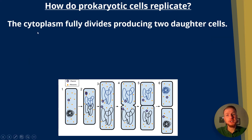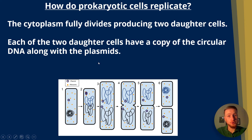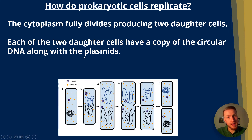Next, the cytoplasm fully divides, producing two daughter cells, as we can see in steps five and six. Each of the two daughter cells has a copy of the circular DNA along with the plasmids. The number of plasmids varies, and you can have many plasmids within each bacterial cell.